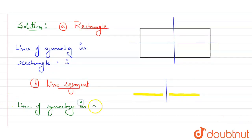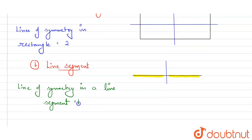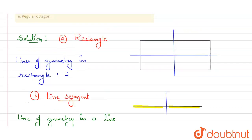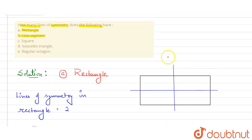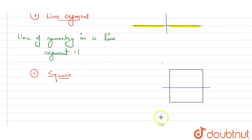So lines of symmetry in a line segment equals one.